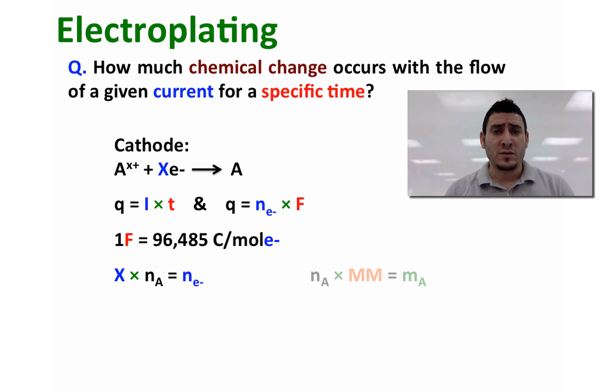Using the number of moles and the atomic mass of the metal, we can calculate the mass of metal that was deposited on the ring.